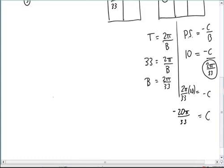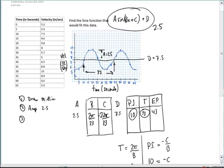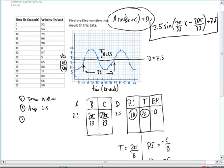The final answer, we'll have 2.5 times the sine of 2π over 33x plus, or rather, the c value is minus, so this will be minus 20π over 33. Plus 7.5, and there would be the trig function that would model that data for velocity versus time.